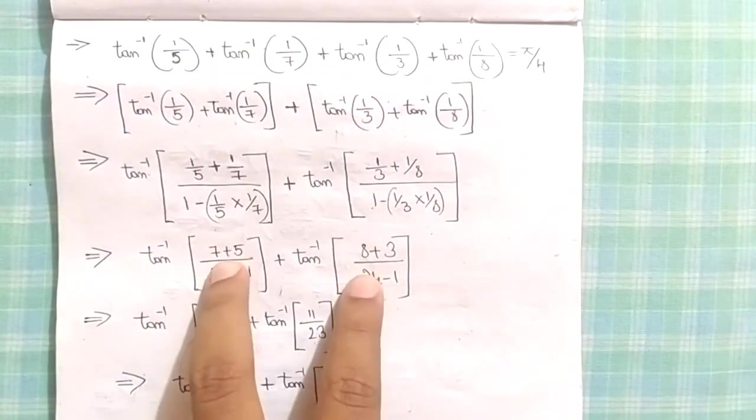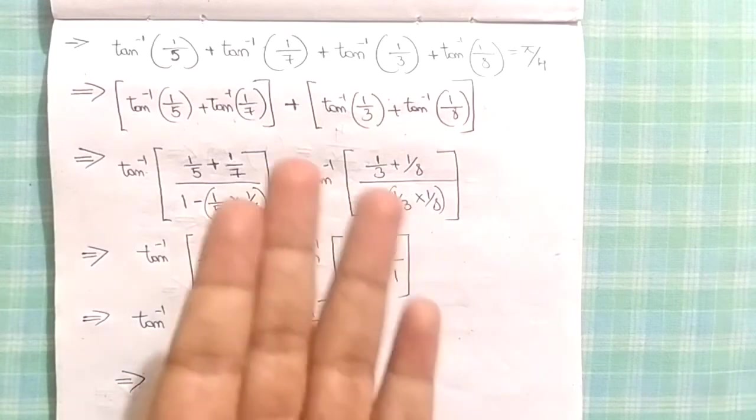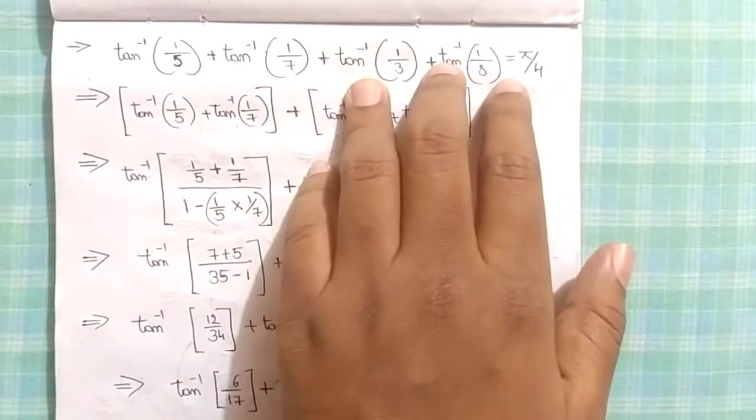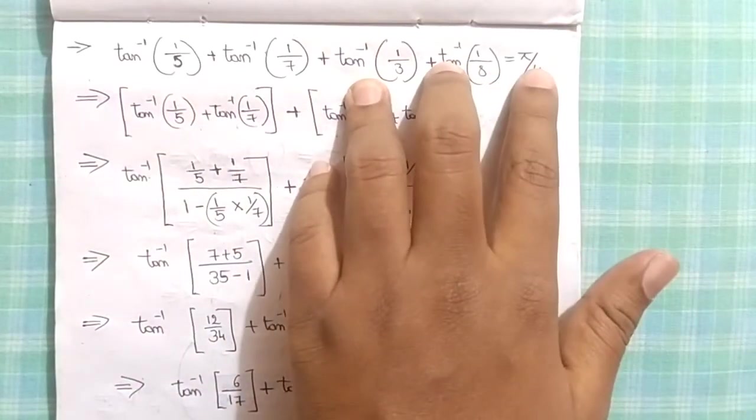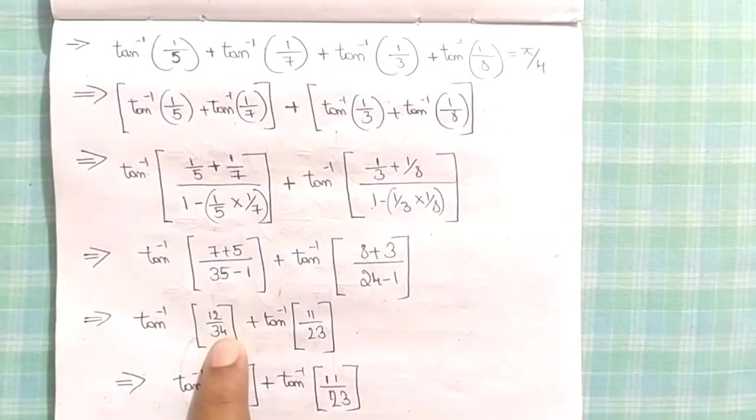This two-term again, using the same formula tan inverse of x plus tan inverse of y, we can reduce to a single term and that single term will be our answer, which is nothing but our RHS π/4. On simplifying we will get tan inverse of 12/34 plus tan inverse of 11/23.